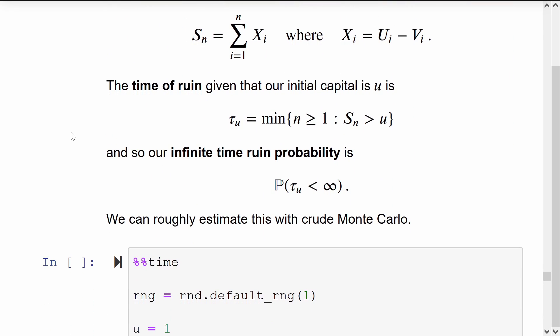Given that we're starting with initial capital of small u, then the time of ruin, tau_u, is the first time that our running sum of net payouts exceeds the initial capital that we have.